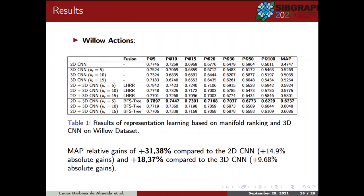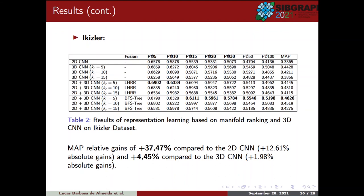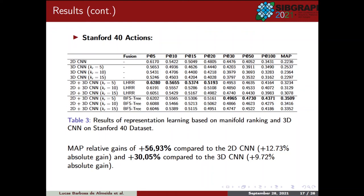For the Willow dataset, it is possible to notice MAP relative gains of 31.38% compared to the 2D CNN and 18.37% compared to the 3D CNN. For the Eclisir dataset, MAP relative gains of 37.47% compared to the 2D CNN and 4.45% compared to the 3D CNN. Finally, for Stanford-40 Actions, it is possible to notice MAP relative gains of 56.93% compared to the 2D CNN and 30.05% compared to the 3D CNN. As we can see in our datasets, the scenario considering 5 neighbours obtained better results, so we will use it in the visual analysis performance.